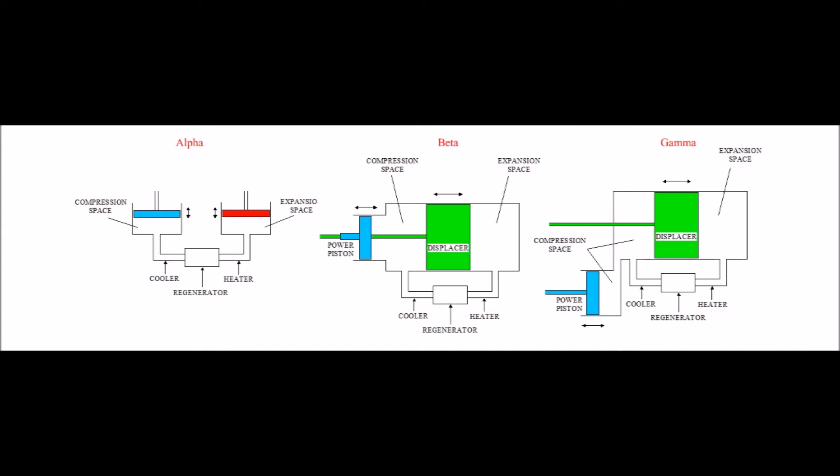Gamma type is similar to beta engine, containing a power piston and displacer cylinder. But both have separated like an alpha configuration.